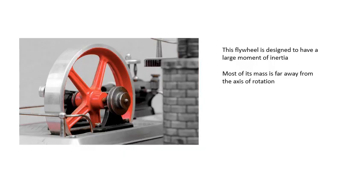This is a flywheel. We'll do a whole video about flywheels later on. But basically, a flywheel should have a large moment of inertia. And one way that this is achieved is that most of the mass of the flywheel is as far away from the central axis, the axis of rotation, as possible. That gives it a large moment of inertia.